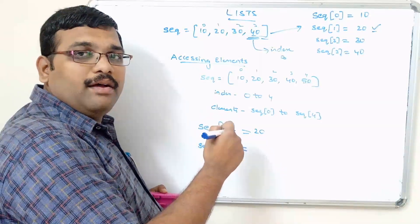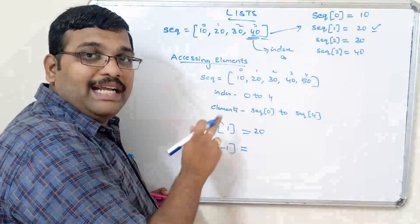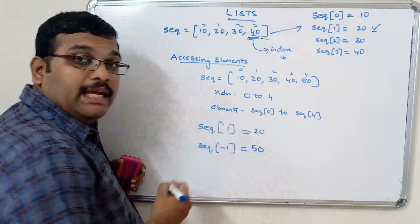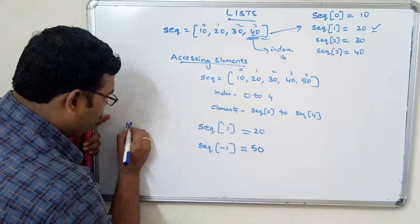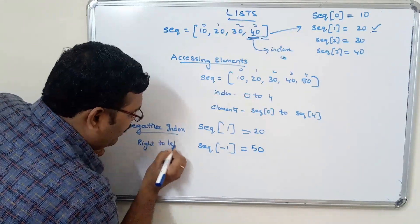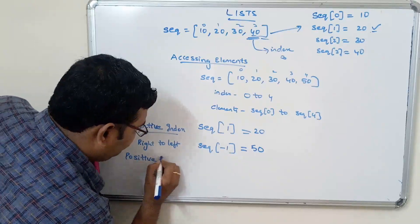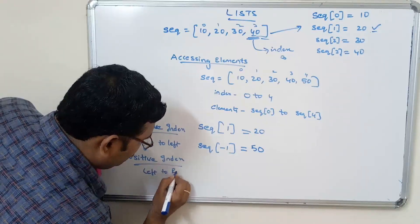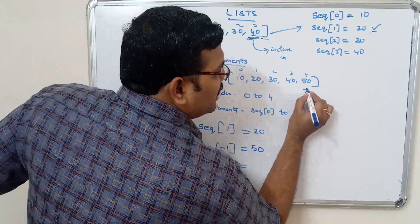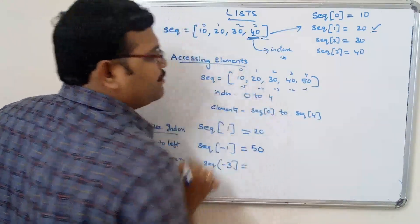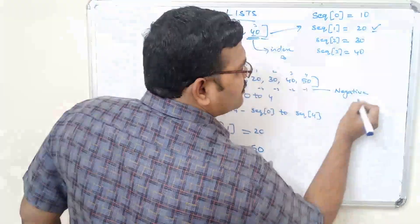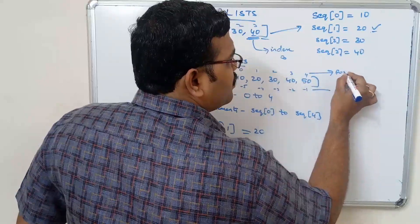If it is a negative value, the first element from the right has index minus 1. So sequence[-1] returns 50. Negative index means right to left; positive index means left to right. sequence[-1] gives 50. For sequence[-3], counting from the right: minus 1, minus 2, minus 3 — so minus 3 gives 30.